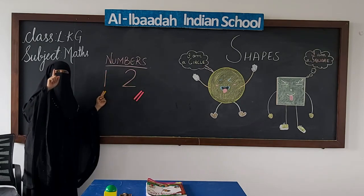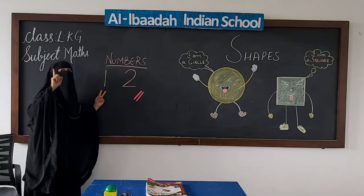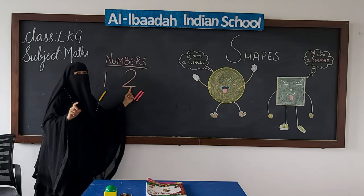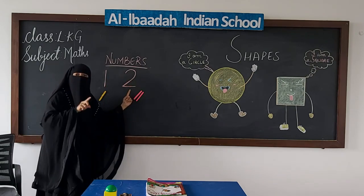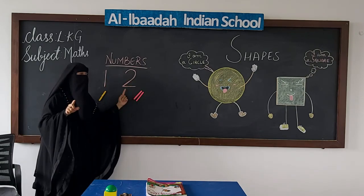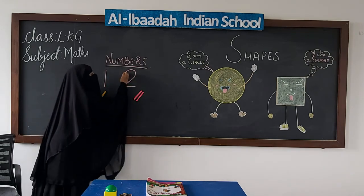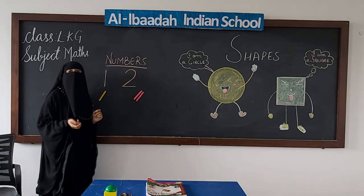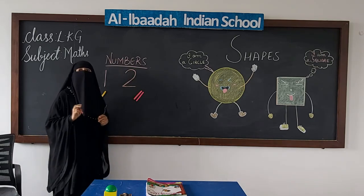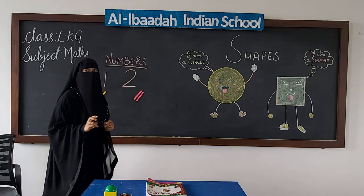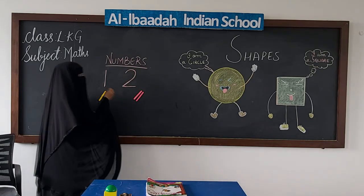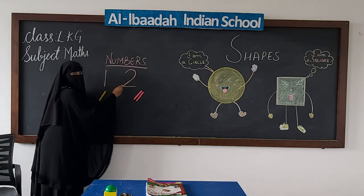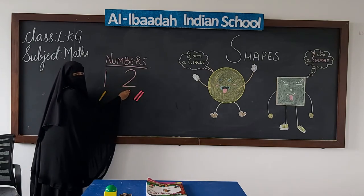A one standing line makes number 1. And now for number 2, a half curve on a sleeping line makes number 2. 1, 2.